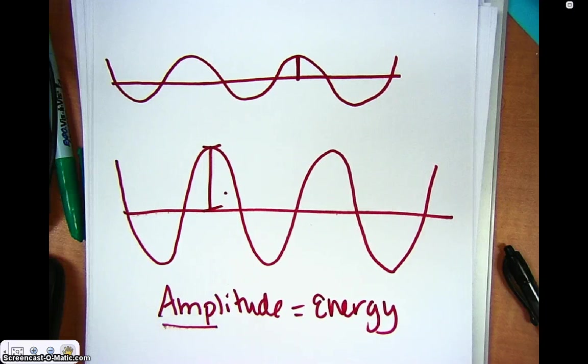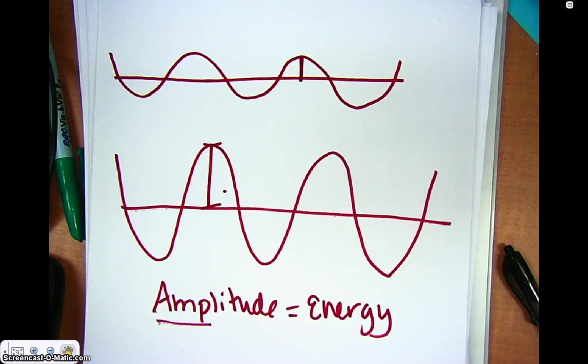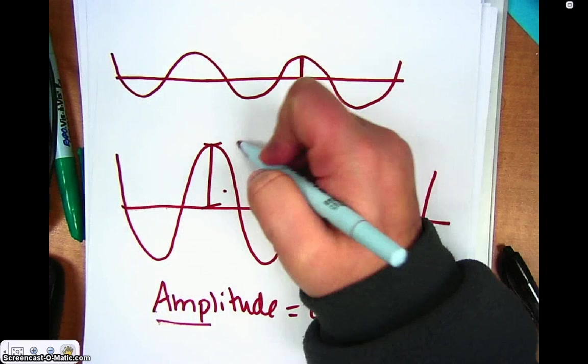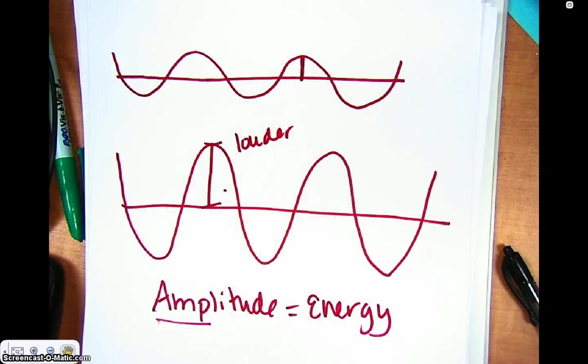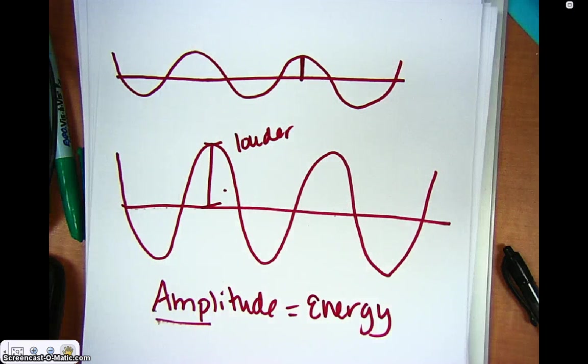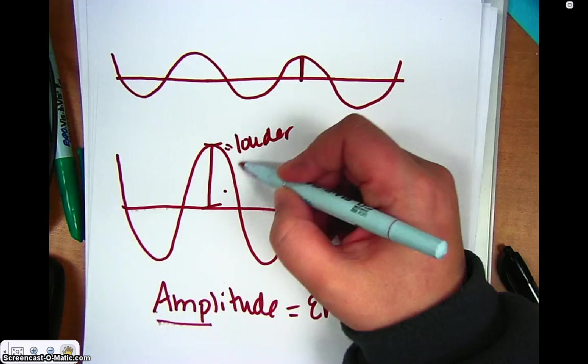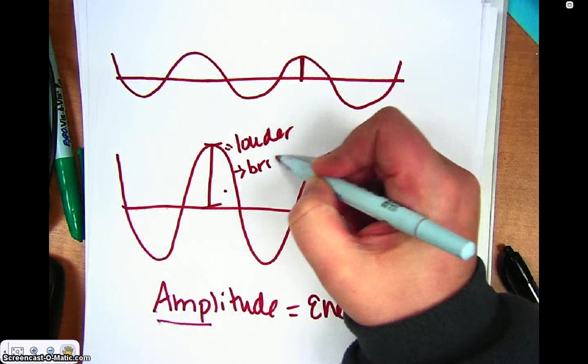When you hear the words like amplitude, you typically think of like an amplifier making something louder, right, or amplifying a sound. And that's really how it works in a sound wave, is that if it has a higher amplitude, it's actually going to be louder. Whereas, in terms of light, if it has a higher amplitude, it's going to be typically brighter.